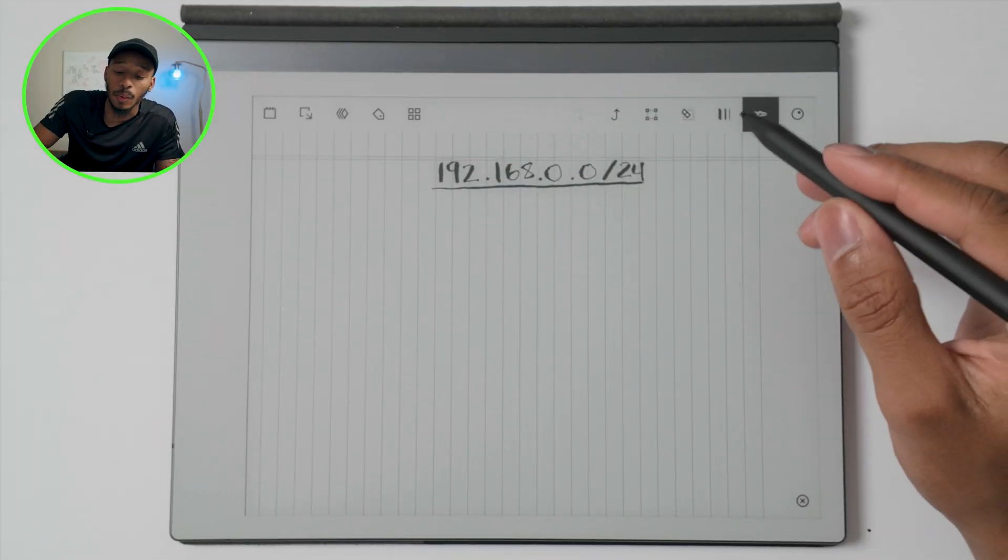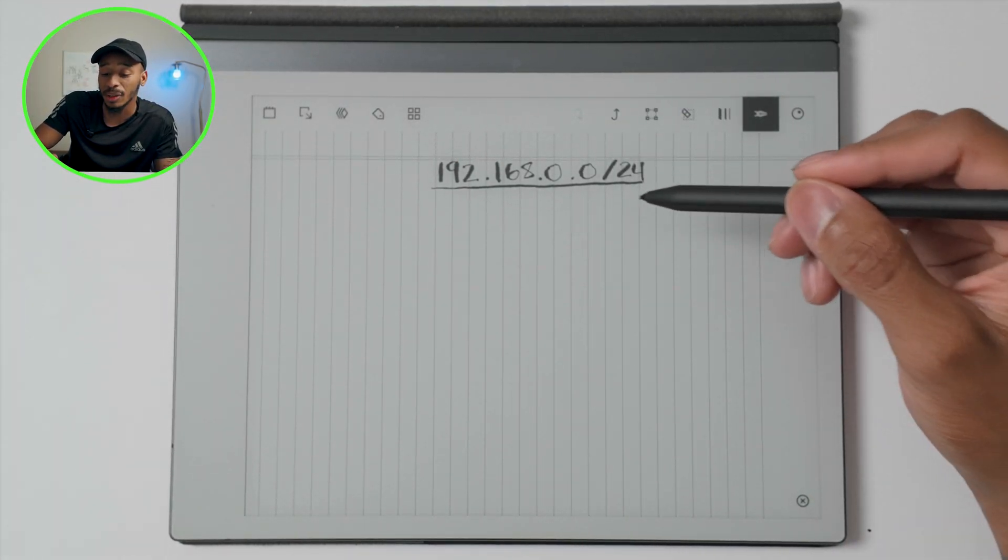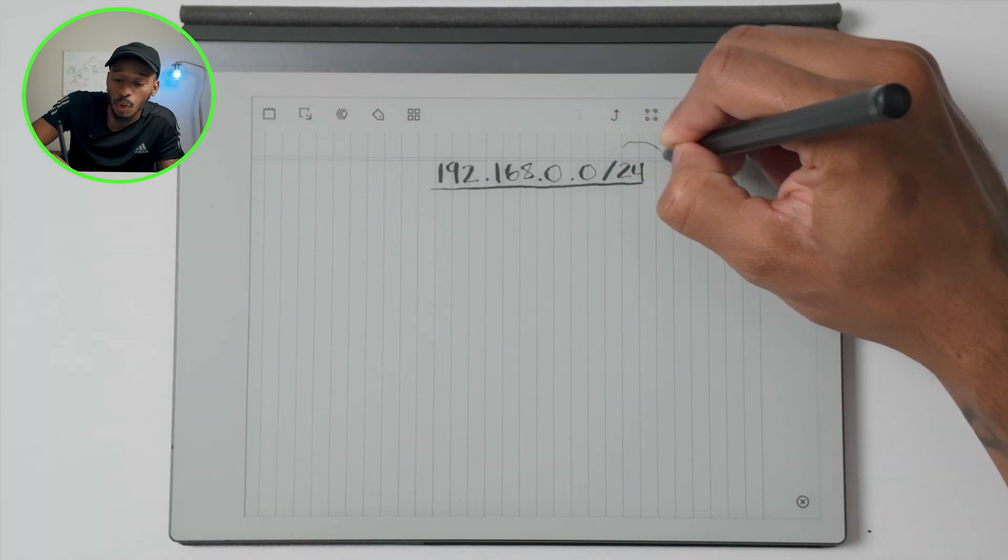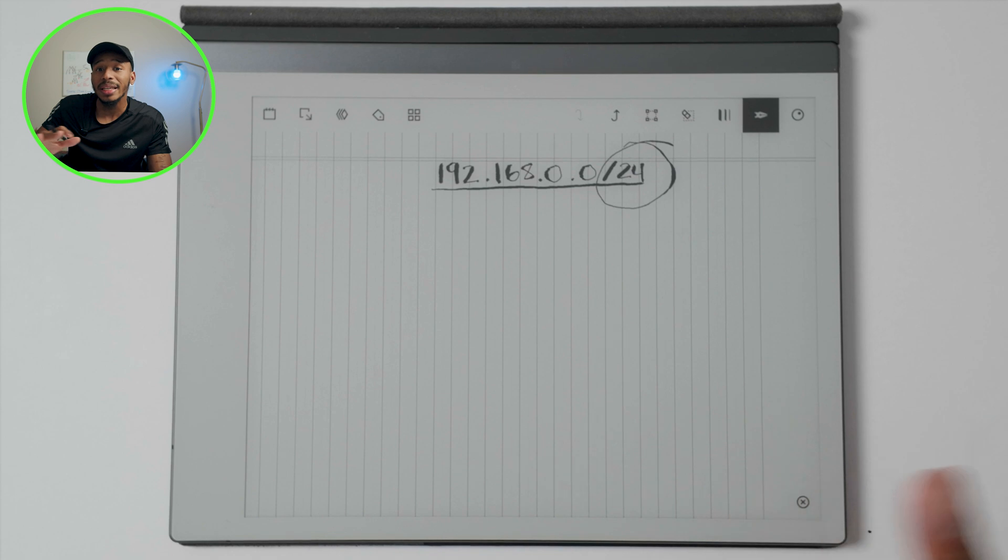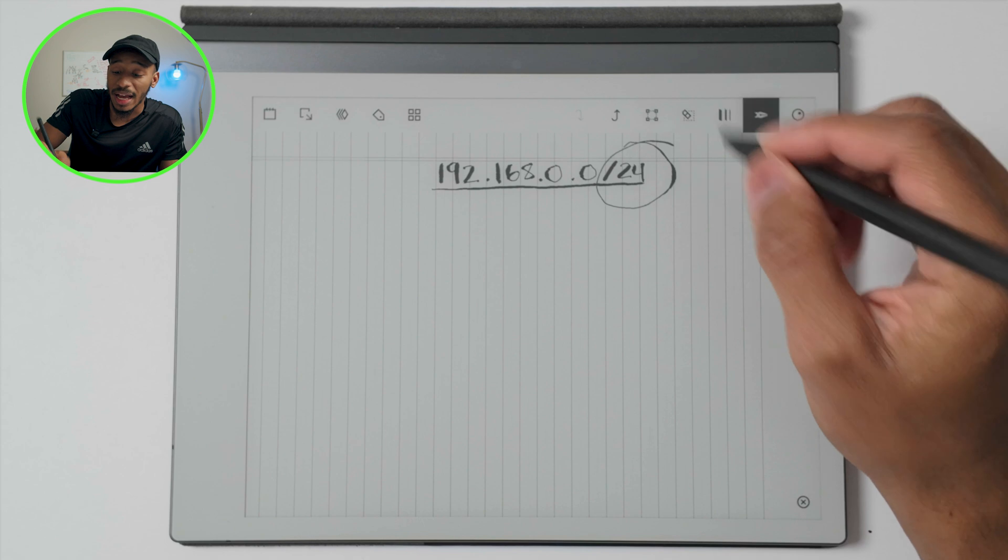When you look at a network address, in this case, I have 192.168.0.0 slash 24, which is pretty common. This is the portion of the address that really gives away how many host addresses can reside on this subnet. In this case, this is a slash 24.